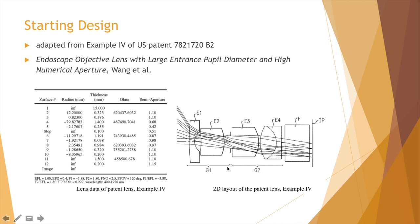In order to correct chromatic aberration, the two elements in the doublet lens have refractive indices differing by more than 0.02 and the Abbe number differing by more than 15. An optical filter is also placed in between the last lens element and the image plane.